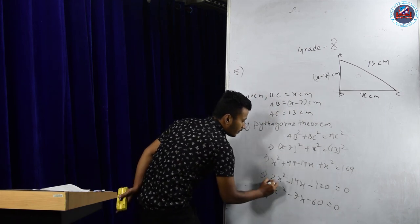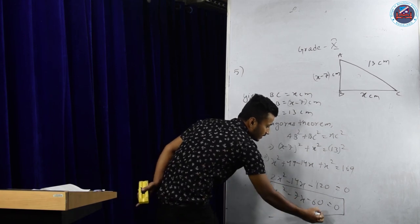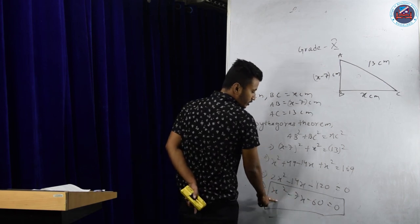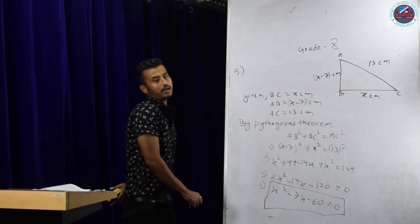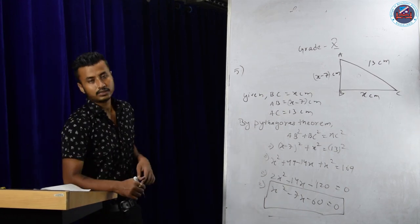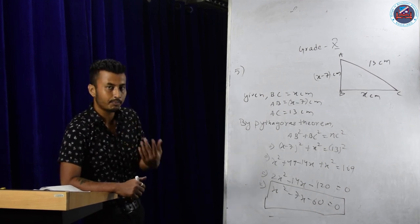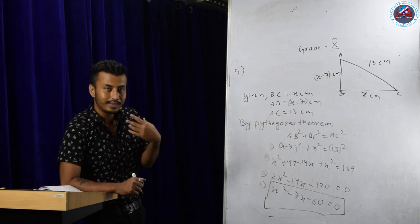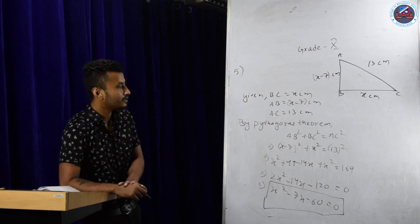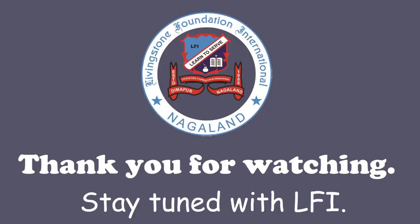Please try to solve x² minus 7x minus 60 equals zero by yourself using middle term factorization and find the values of x, then write the answer in your copy. As a reminder, you are supposed to do all the questions from exercises 4.1, 4.2, 4.3, and 4.4 in your copy. Whatever doubts you have, you can ask me later. In the next class, we will start with exercise 4.3. Thank you.